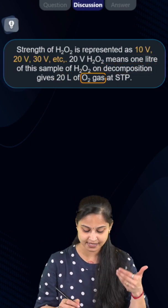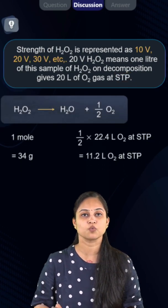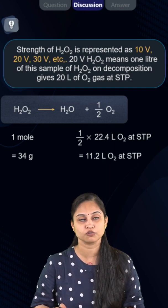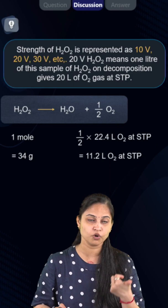So according to old STP wherein we took the pressure equals to 1 atm, our calculation comes out to be 11.2 liters of oxygen at STP when one mole of H2O2 gets decomposed.